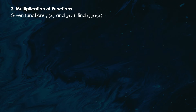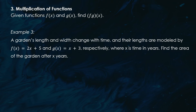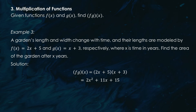Here's a real-world multiplication example. A garden's length and width change with time, modeled by f(x) = 2x + 5 for the length and g(x) = x + 3 for the width, where x represents time in years. To find the area after x years, we multiply: (f · g)(x) = (2x + 5)(x + 3). Expanding and simplifying, we get 2x² + 11x + 15. So the area of the garden after x years is 2x² + 11x + 15.